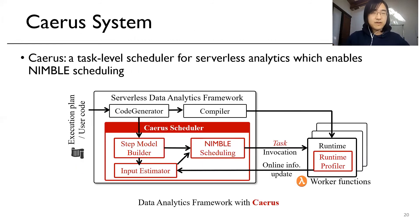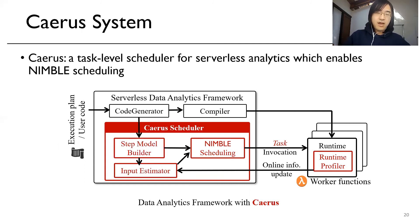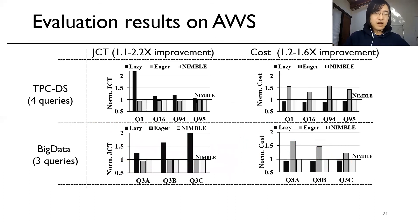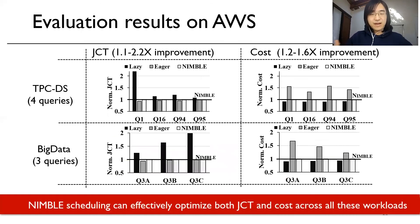To enable Nimble scheduling in practice, we built Sirius, a task-level scheduler for serverless analytics. Sirius is composed of four design components: a step model builder, an input estimator, a scheduling module which applies Nimble scheduling, and a runtime profiler which updates the input estimations. We evaluated Nimble across multiple TPC-DS and big data queries, and the results show that Nimble scheduling can effectively optimize both JCT and cost across all these workloads. Please refer to our paper for more evaluation results.